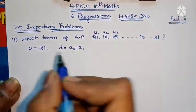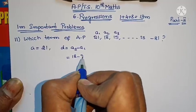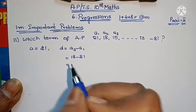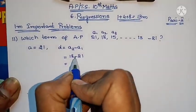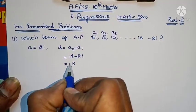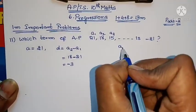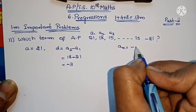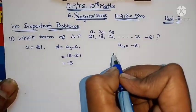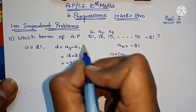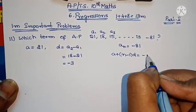A1 is 21, A2 is 18, A3 is the next. So A2 minus A1 equals 18 minus 21. 18 minus 21 — since 21 is bigger, the symbol is minus, so d equals minus 3. With these a and d values, n equals the term number for -81. Using the AP formula: An equals A plus (n-1) into D.